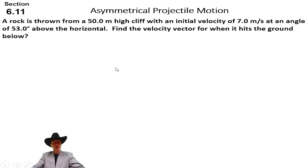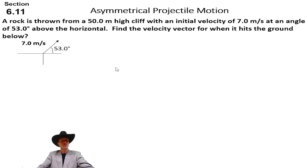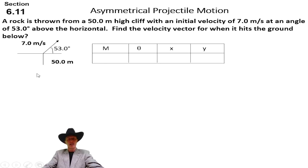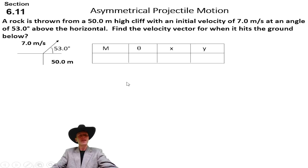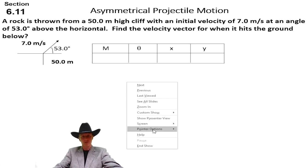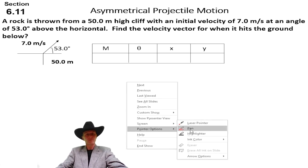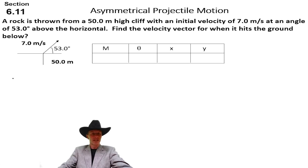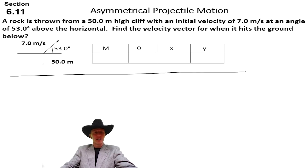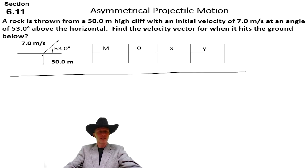Let's try another problem. A rock is thrown from a 50-meter high cliff with an initial velocity at a certain angle. The cliff is 50 meters there, and it wants to know the velocity vector for when it hits the ground. The neat thing about the velocity vector, if we were to draw a picture of this motion, the ground is right here, and this motion is going to go from this lab station.